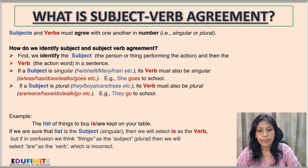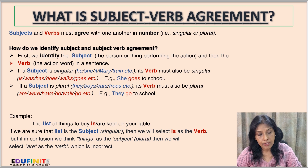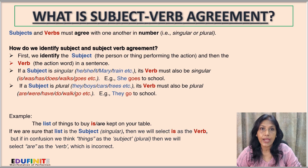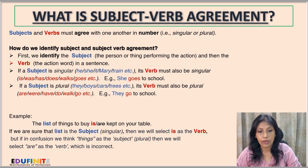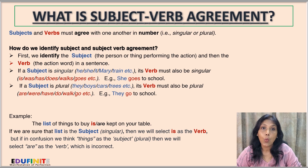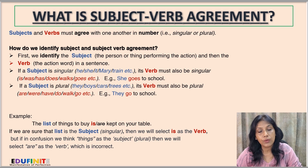If a subject is singular — that is, he, she, it, Mary, train, etc. — the verb must be singular, like is, was, has, does, walks, goes, etc. For example: she goes to school.